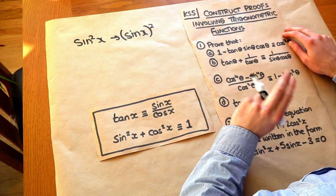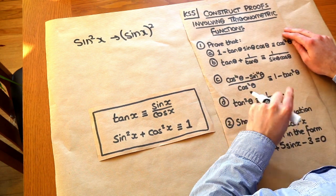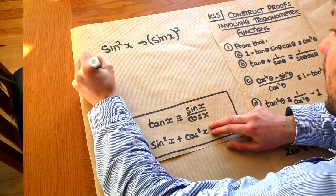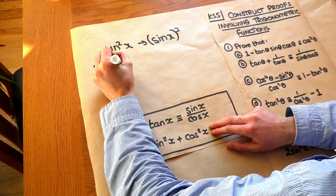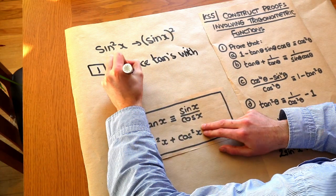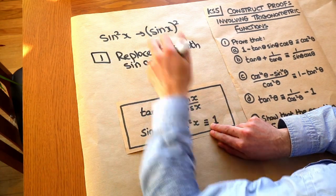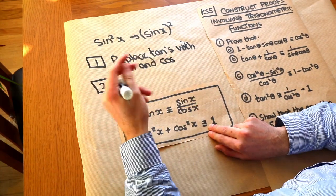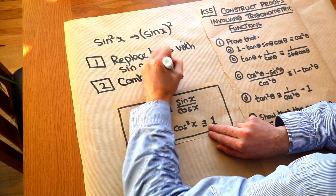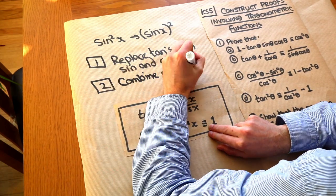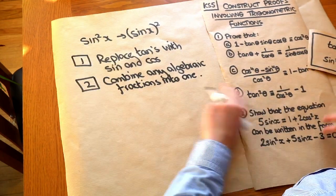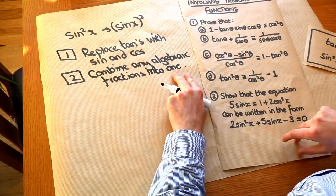I basically have just two tips for any questions involving proving trigonometric identities. One is to replace tans with sines and cosines using this identity here. And my second tip is to combine any algebraic fractions into one single fraction. That about allows you to solve all of these questions.